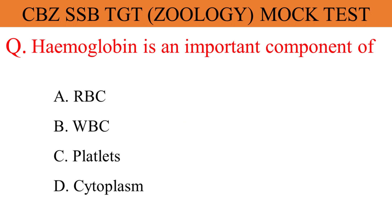Hemoglobin is an important component of: The given options are A. RBC, B. WBC, C. Platelets, D. Cytoplasm. And the correct answer is option A. RBC.